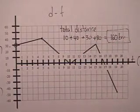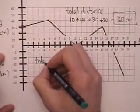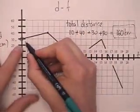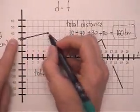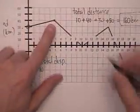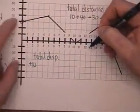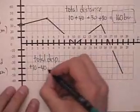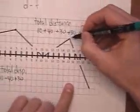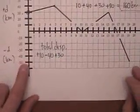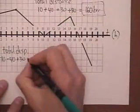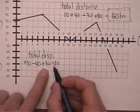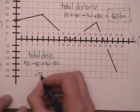Now for total displacement, direction matters. From 30 to 40 in the positive direction is positive 10. From 40 down to 0 is minus 40. From 0 up to 30 is positive 30. From positive 30 down to minus 50 is 80 in the negative direction, so minus 80. Adding these: 10 minus 40 is minus 30, plus 30 is 0, minus 80 gives minus 80 kilometers total displacement.